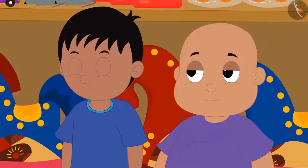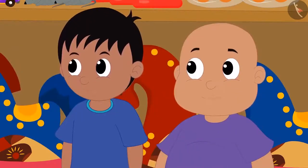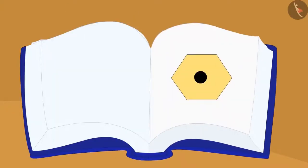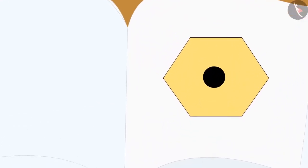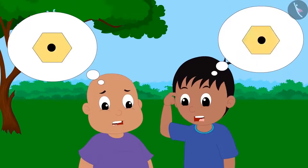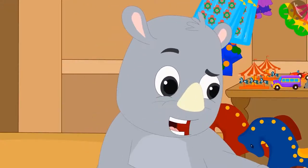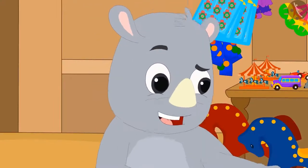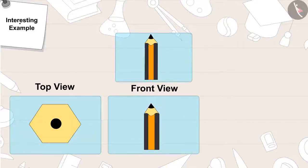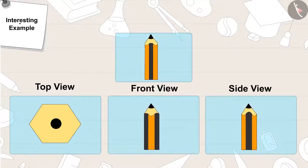They immediately replied, 'Yes.' Gaggoo opened the book and showed them a picture, asking them to identify the object. Raju and Bablu started thinking and said, 'It is very easy — it is a pencil!' From the top view, a pencil looks like this. From the front view, it looks like this. And from the side view, it looks like this.